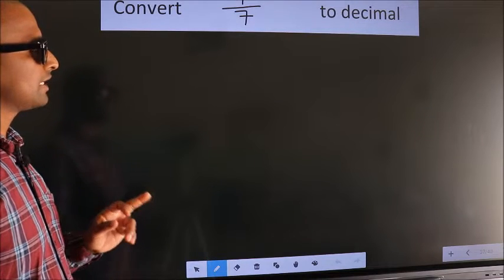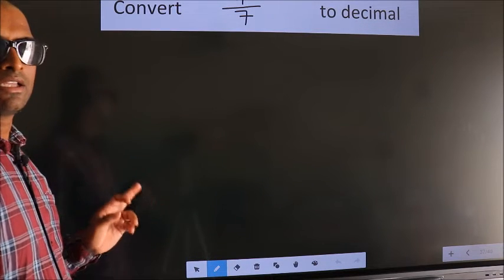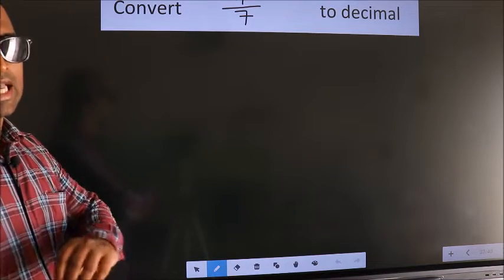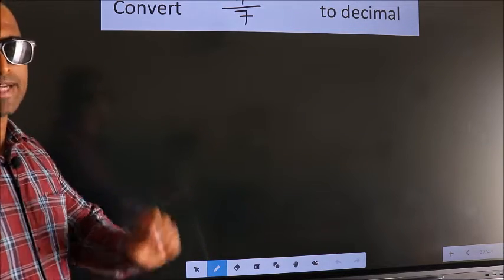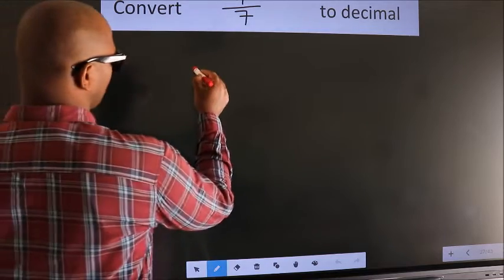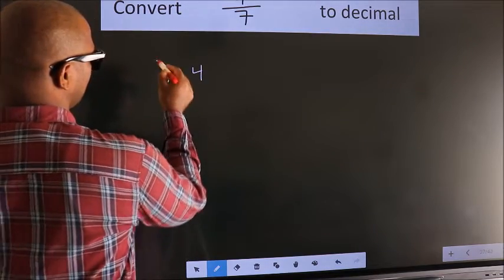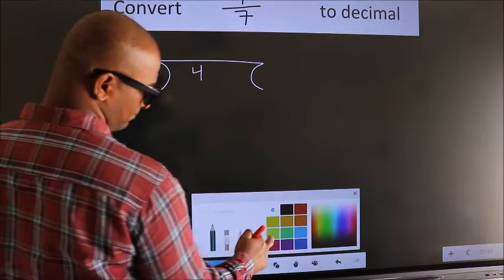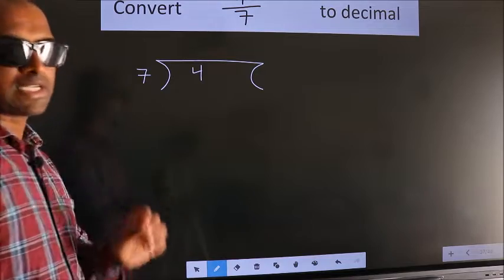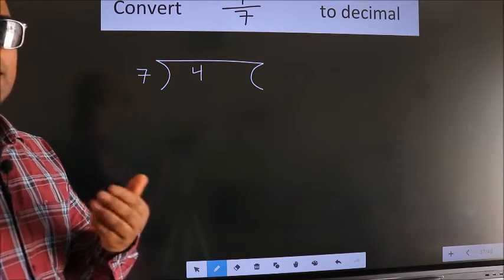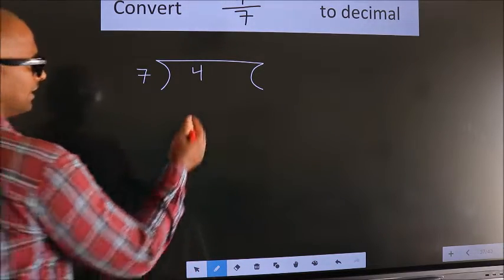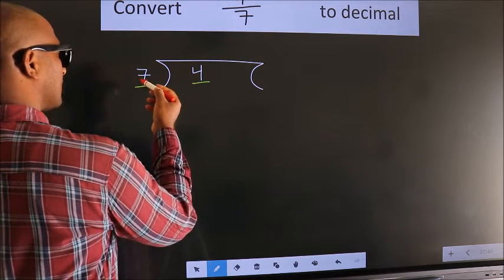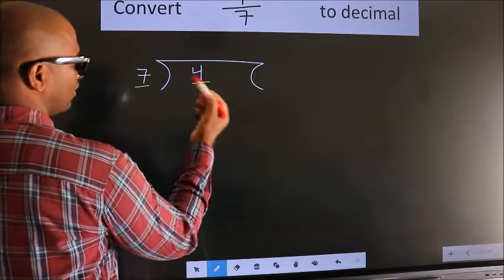To convert 4/7 to decimal, we have to divide. We frame it with 4 here and 7 here — this is step 1. Next, we have 4 here and 7 here. 4 is smaller than 7, so we need to place a decimal point.